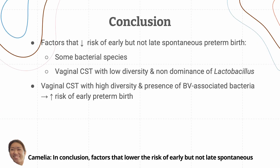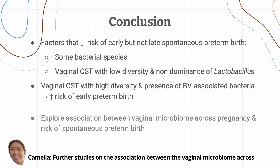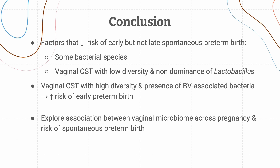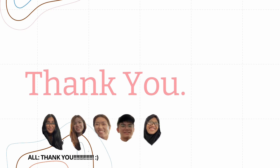In conclusion, factors that lower the risk of early but not late spontaneous preterm birth include some bacterial species like L. gasseri and B. longum, and vaginal CSTs with low diversity and non-dominance of lactobacillus species. Further studies on the association between the vaginal microbiome across pregnancy and risk of spontaneous preterm birth are also recommended while considering the immunology of the host. We have now come to the end of our presentation. Thank you!